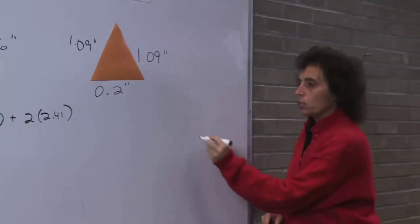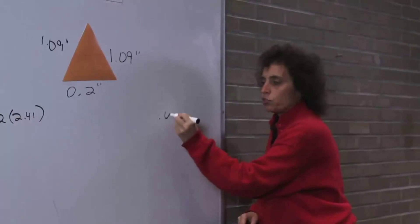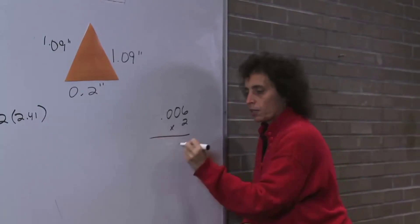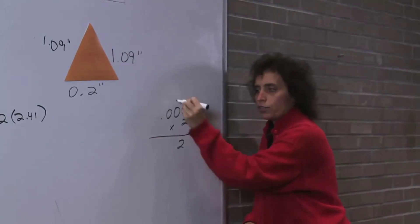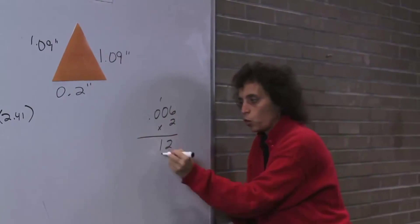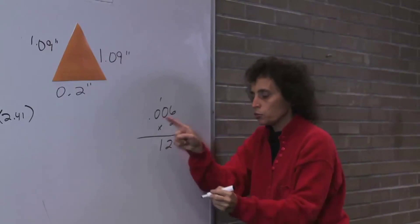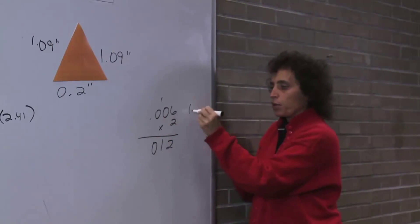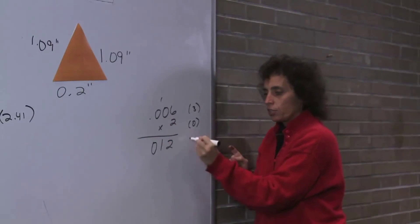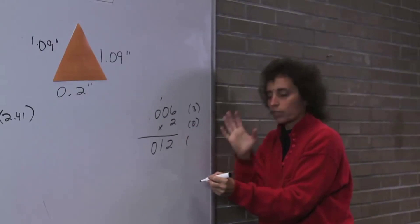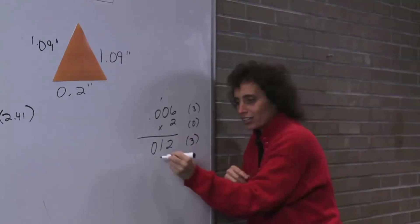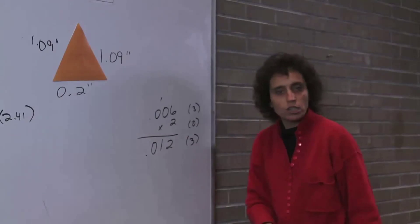We multiply 0.006 by 2. We get 12, carry the 1 — 2 times 0 is 0, plus 1 is 1; 2 times 0 is 0 — and remember, 3 decimal places. So you get 0.012.